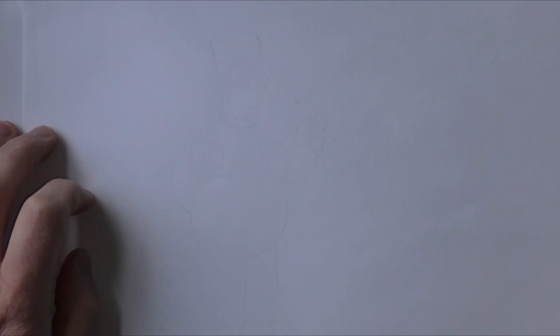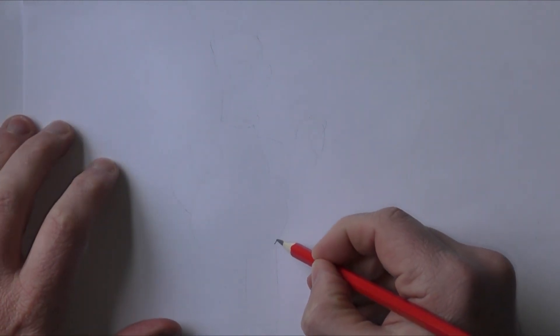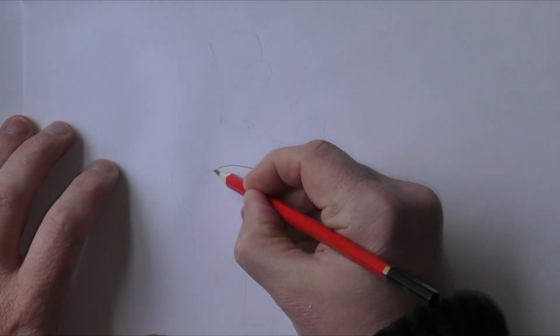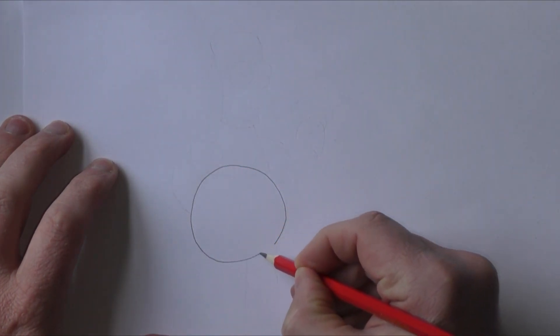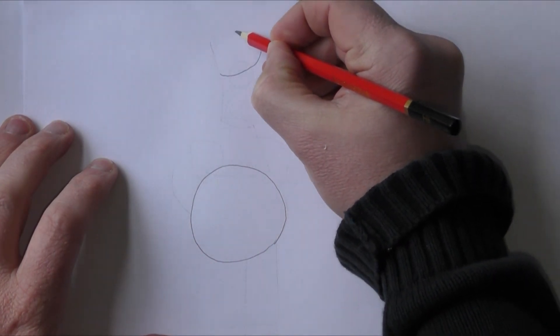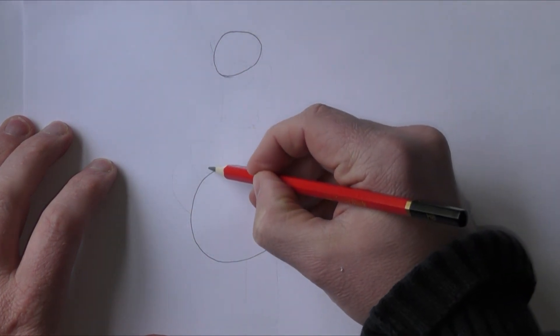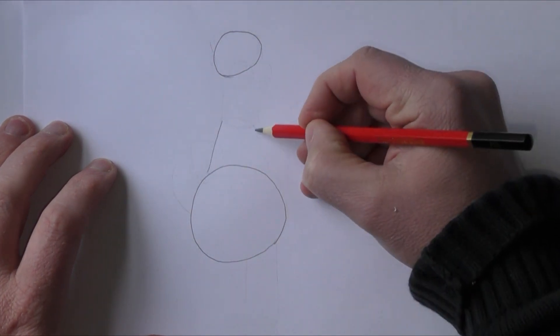Right, here we go then. Let's get going and draw Homer Simpson. So first of all we need to start off with his big round belly, so we just need to draw a big circle right there. And then we've got other circles as well, so there's another circle at the top which forms part of his head, and then we join the two together with a couple of straight lines.